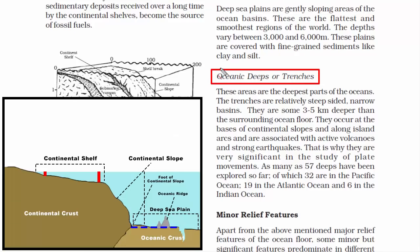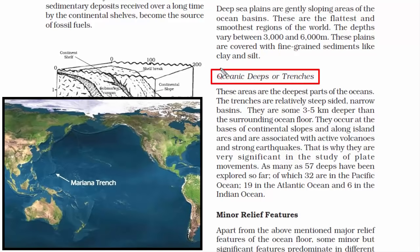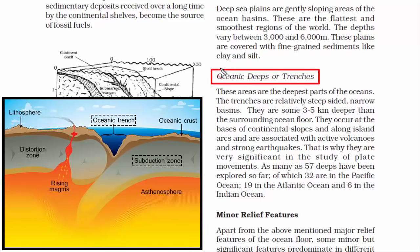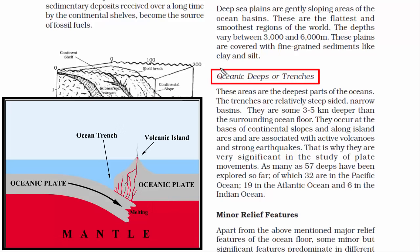The fourth major division is oceanic deeps or trenches — the deepest parts of the oceans. These are like a long narrow cavity in the ocean bed. The Mariana Trench is the deepest part of the world's oceans at approximately 10,994 meters below sea level. Oceanic trenches are formed by subduction — a geological process where a tectonic plate moves under another, either continental plates or oceanic and continental plates.